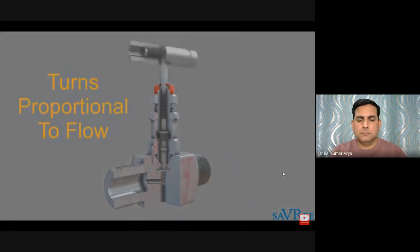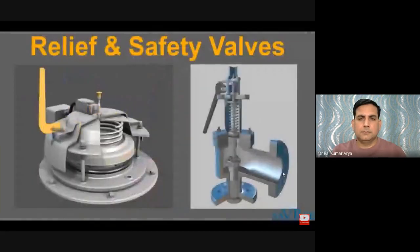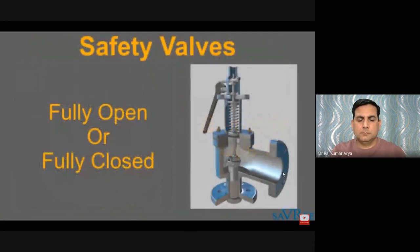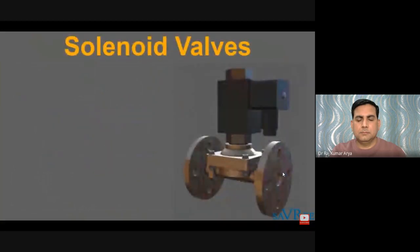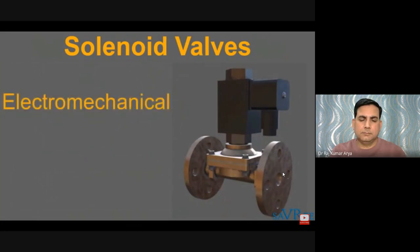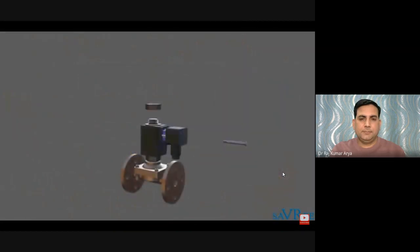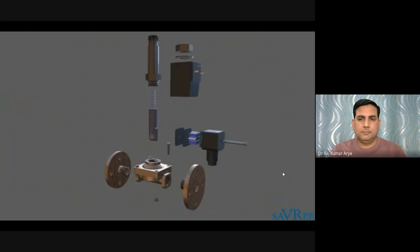Relief and safety valves prevent equipment damage by relieving accidental system overpressurization. A relief valve gradually opens as inlet pressure increases above the set point, opening only enough to relieve the overpressure condition. A safety valve rapidly pops fully open as soon as the pressure setting is reached and stays fully open until pressure drops below a reset pressure. Solenoid valves are electromechanically operated valves well suited to opening and closing operations. They can start or stop flow but are not well suited for regulating flow. An electromagnet operates the valve when current is supplied, and a spring returns the valve to its fail-safe position when current is no longer present.